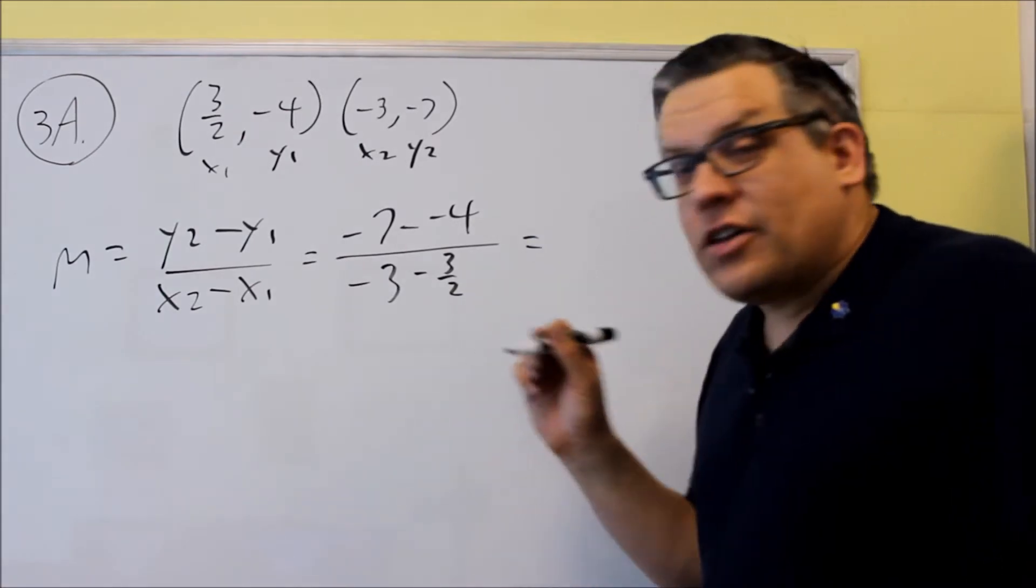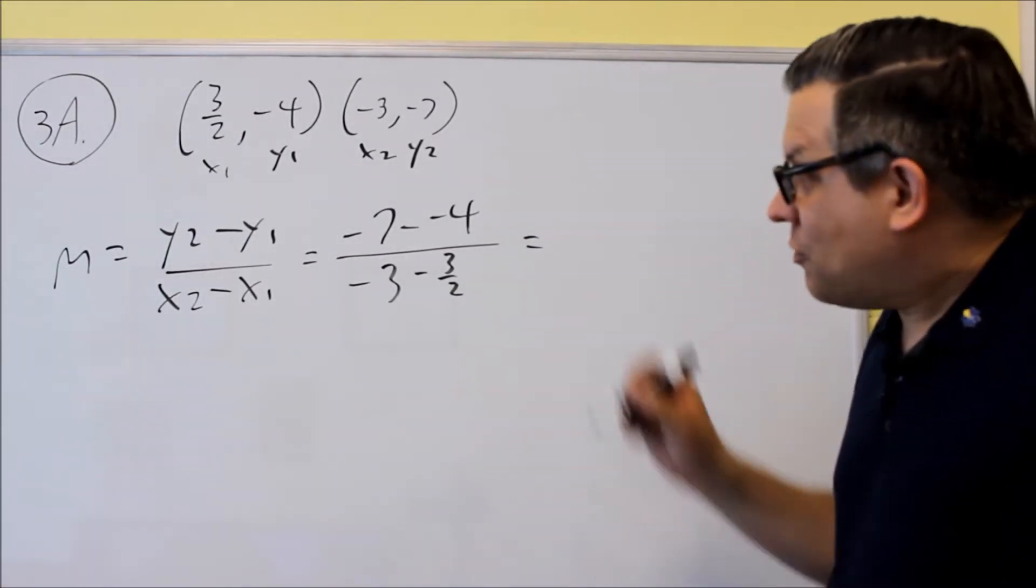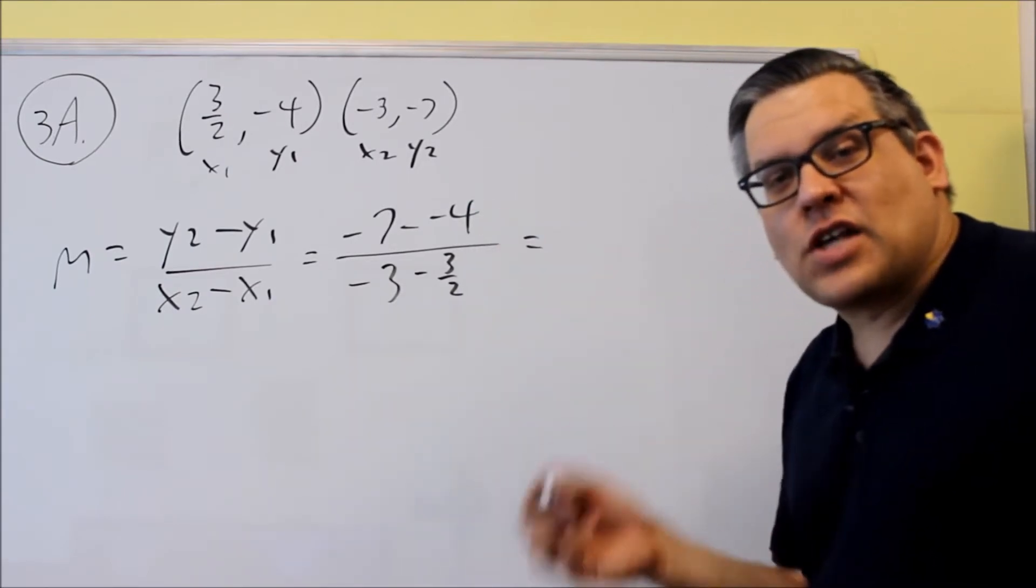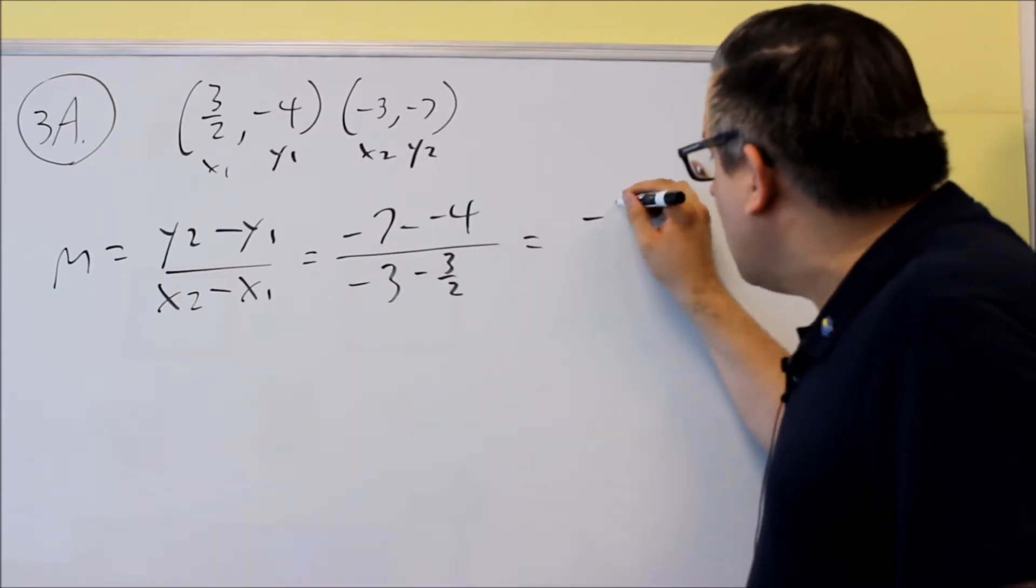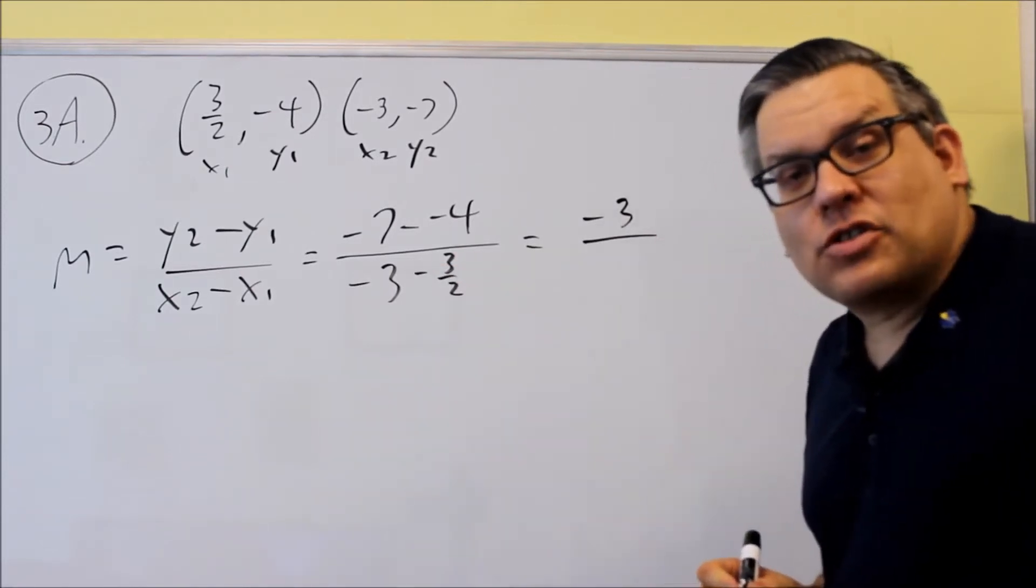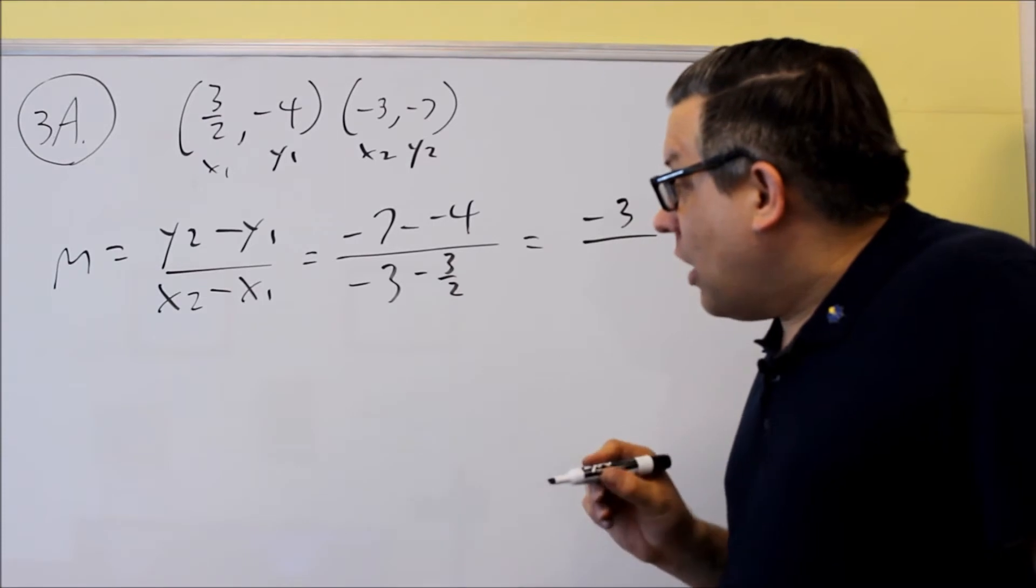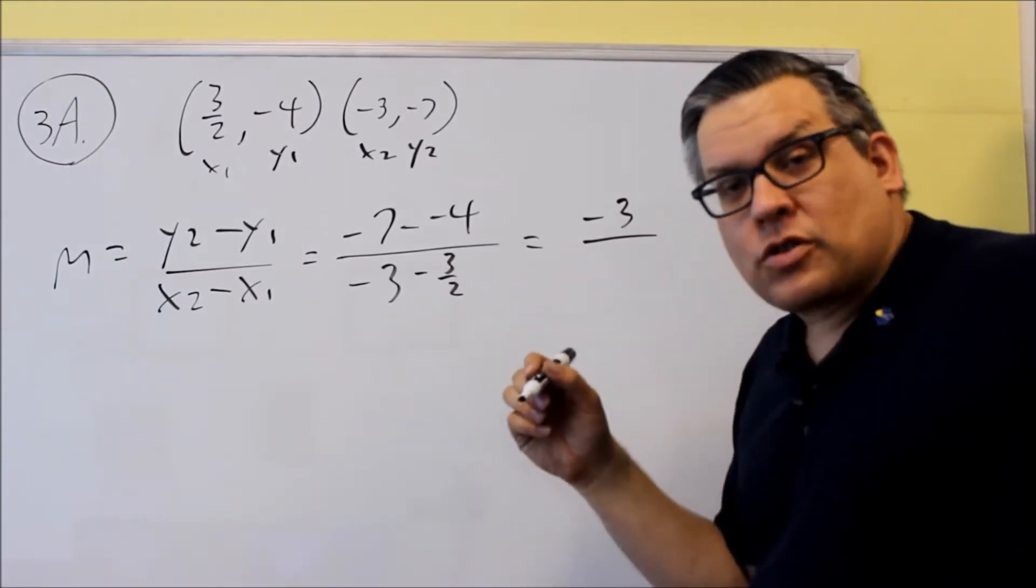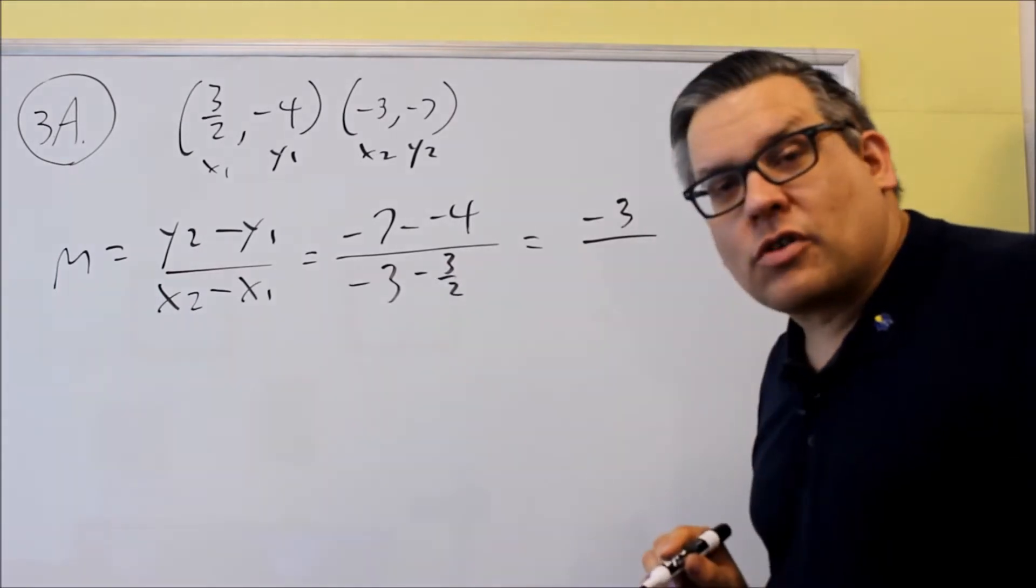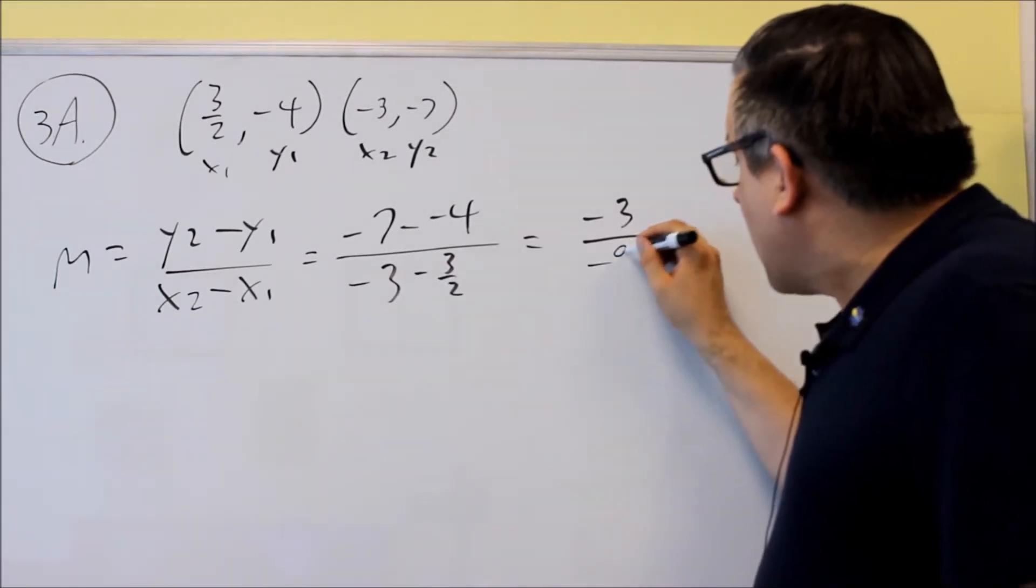We want to simplify this and find the slope. So we have negative 7 minus a negative 4, so it's negative 7 plus 4. That's going to give you negative 3. On the bottom we have to subtract these with a common denominator. So negative 3 will multiply by 2 over 2, so you'll get negative 6 over 2 minus 3 over 2. It's going to give you negative 9 over 2.